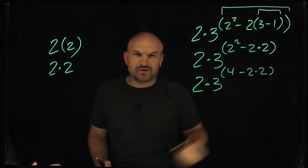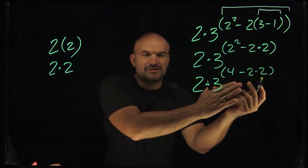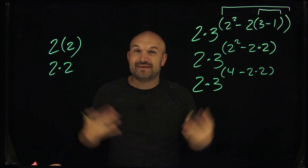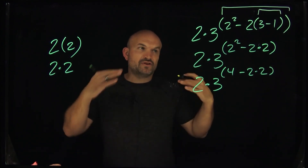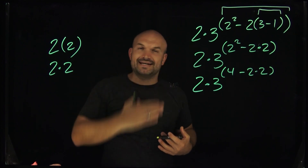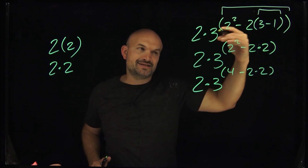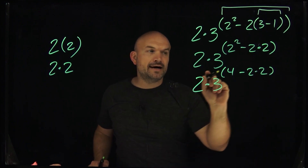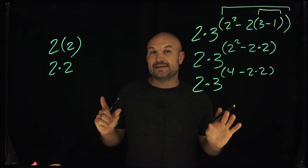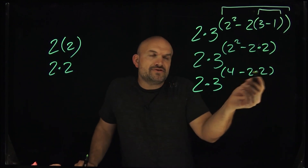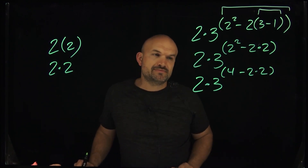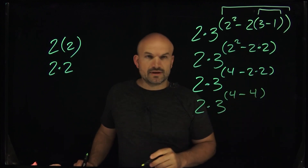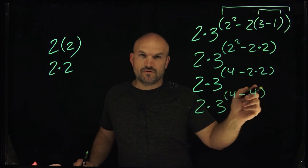You could have multiplied two times two at the same time since those operations weren't impacting one another — no harm in doing two operations simultaneously when they're independent. For clarity I'm showing one at a time. Going ahead and multiplying, we now have four minus four inside the parentheses.